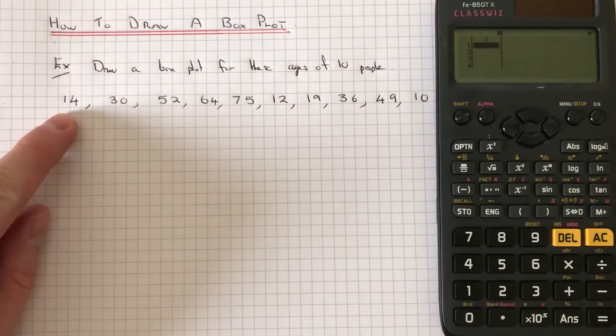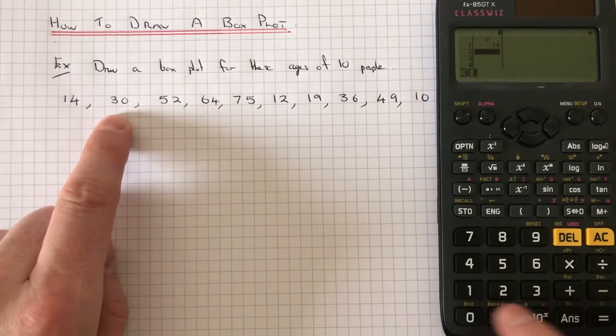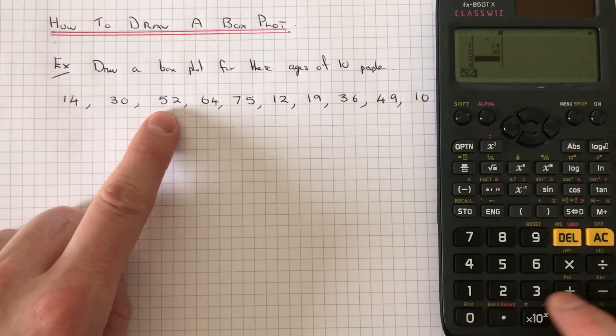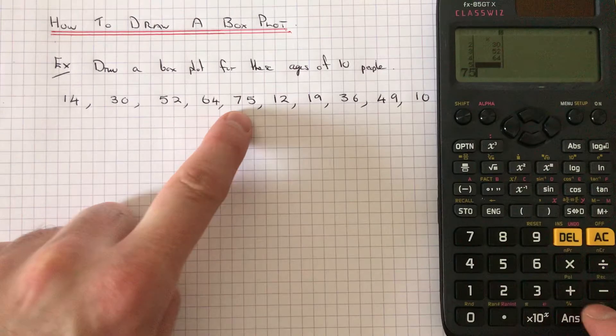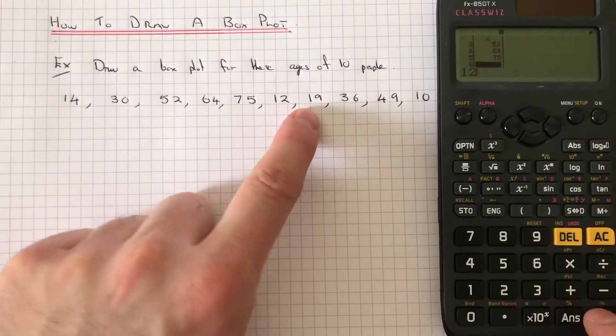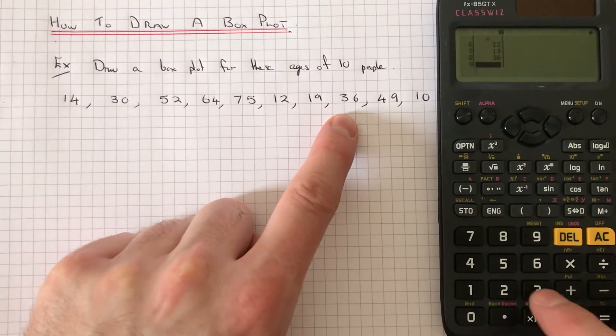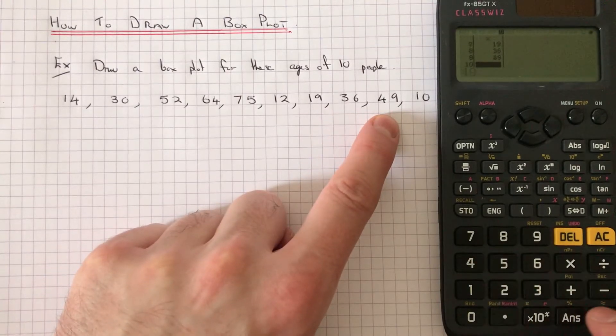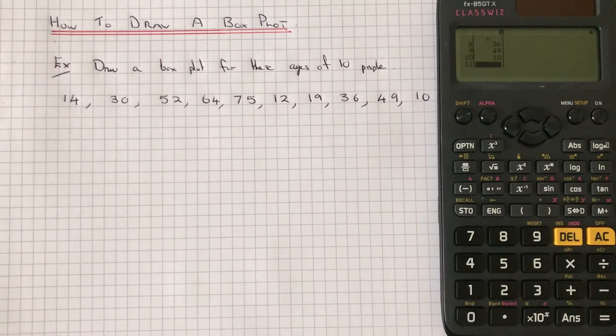So let's just type our data in. So our first one is 14, 30, 52, 64, 75, 12, 19, 36, 49 and 10.